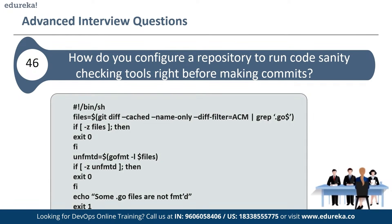The script shown here checks whether any .go file that is about to be committed needs to be passed through the standard Go source code formatting tool. By exiting with a non-zero status, the script effectively prevents the commit from being applied to the repository.